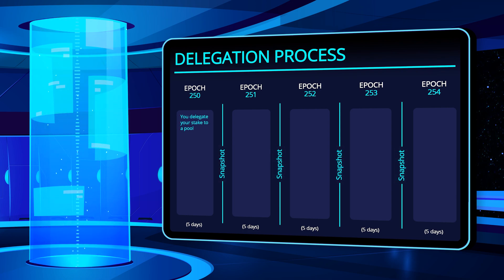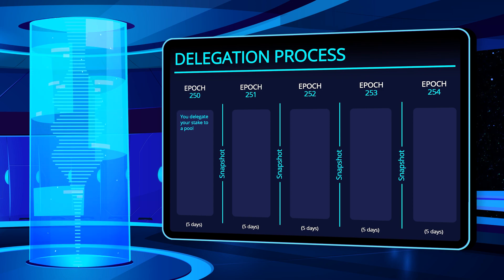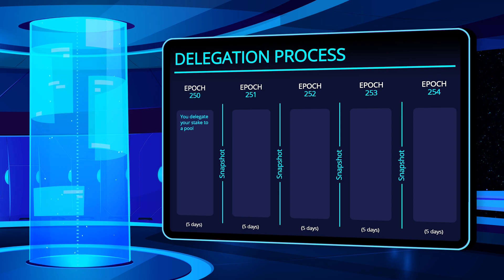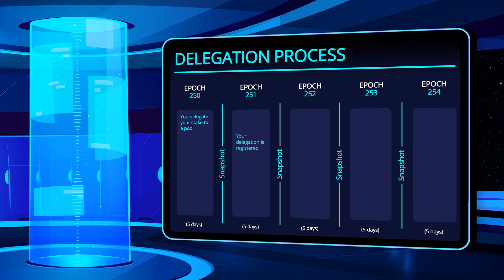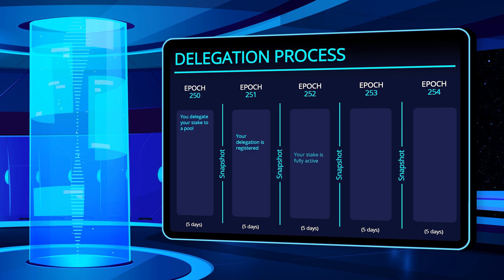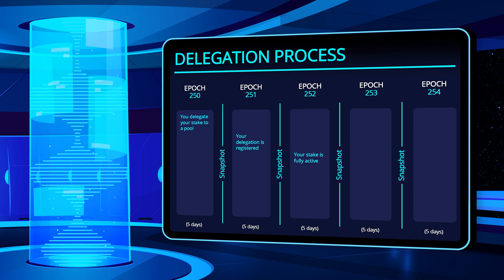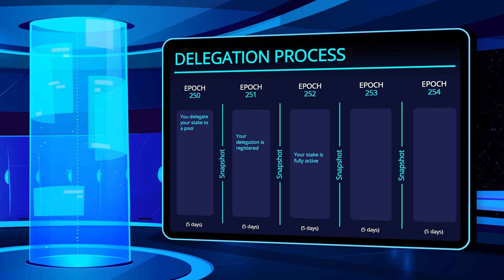You delegate your ADA coins in epoch 250. At this point, nothing happens at first, except that the number of your coins is counted to the live stake of the selected pool. In epoch 251, your delegated stake is now fully registered. In epoch 252, your stake is activated and counts towards the active stake of the selected pool.